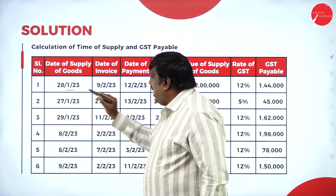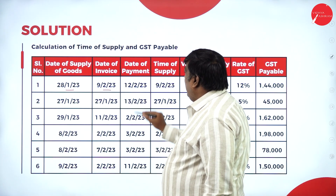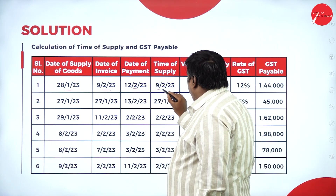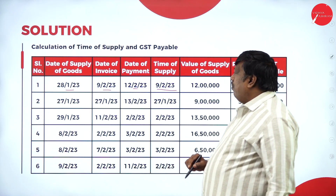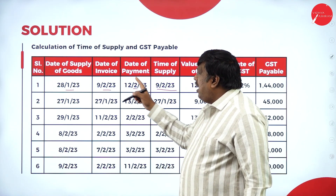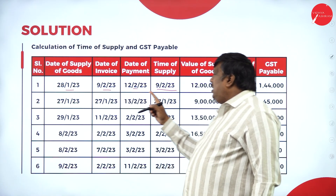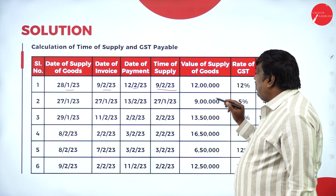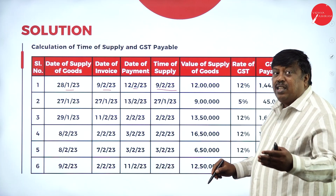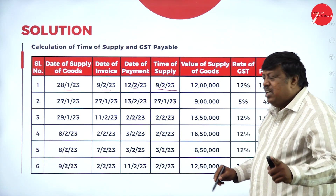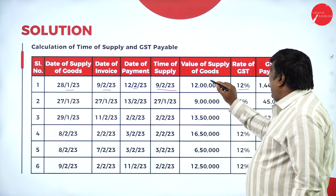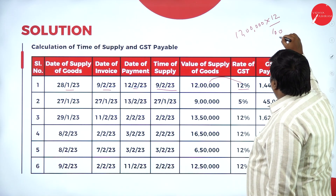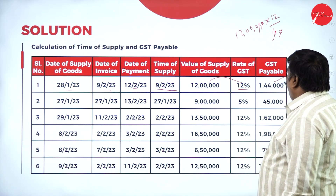Case 1: date of supply of goods 28th January, invoice 9th February, payment 12th February. Of invoice and payment, whichever is earlier — 9th February is the time of supply. 9th February is after 1st February, so new rate applies: 12%. GST = ₹12 lakhs × 12% = ₹1,44,000. Case 2: whichever is earlier of invoice and payment is 27th January. 27th January is before 1st February, so old rate applies: 5%. GST = ₹9 lakhs × 5% = ₹45,000.